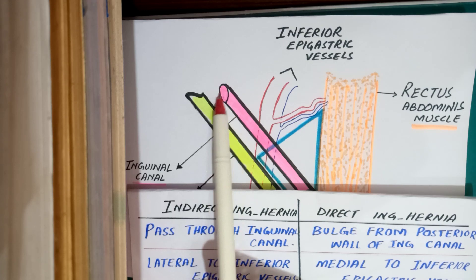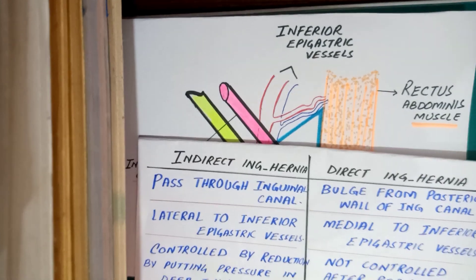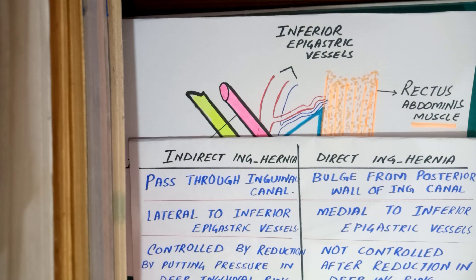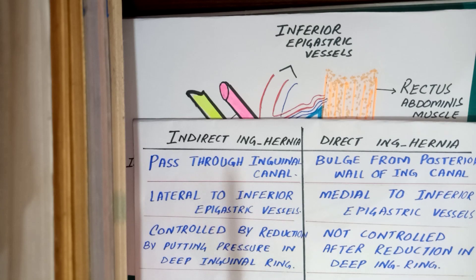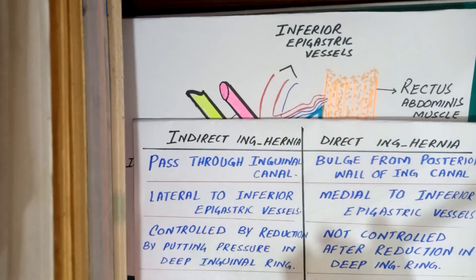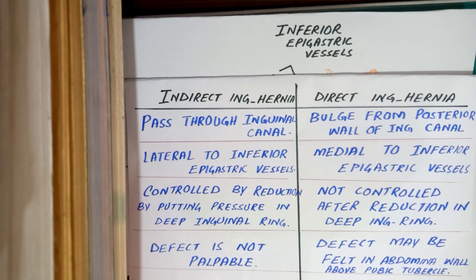The third difference is that we can control indirect inguinal hernia by putting pressure on the deep inguinal ring. This is because indirect inguinal hernia passes through the deep inguinal ring, so we can control it by reduction at the deep inguinal ring. Direct inguinal hernia does not pass through the deep inguinal ring, so we cannot control it this way.